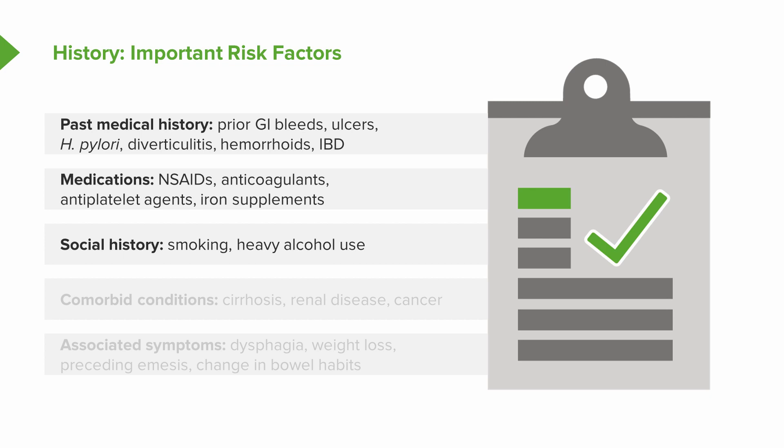Ask about social history — are they a smoker or do they use heavy alcohol? Also gather comorbid conditions such as cirrhosis, renal disease, or cancers. Other associated symptoms to ask about include dysphagia or difficulty swallowing, unintentional weight loss, frequent vomiting prior to the episode, and any other changes in bowel habits.